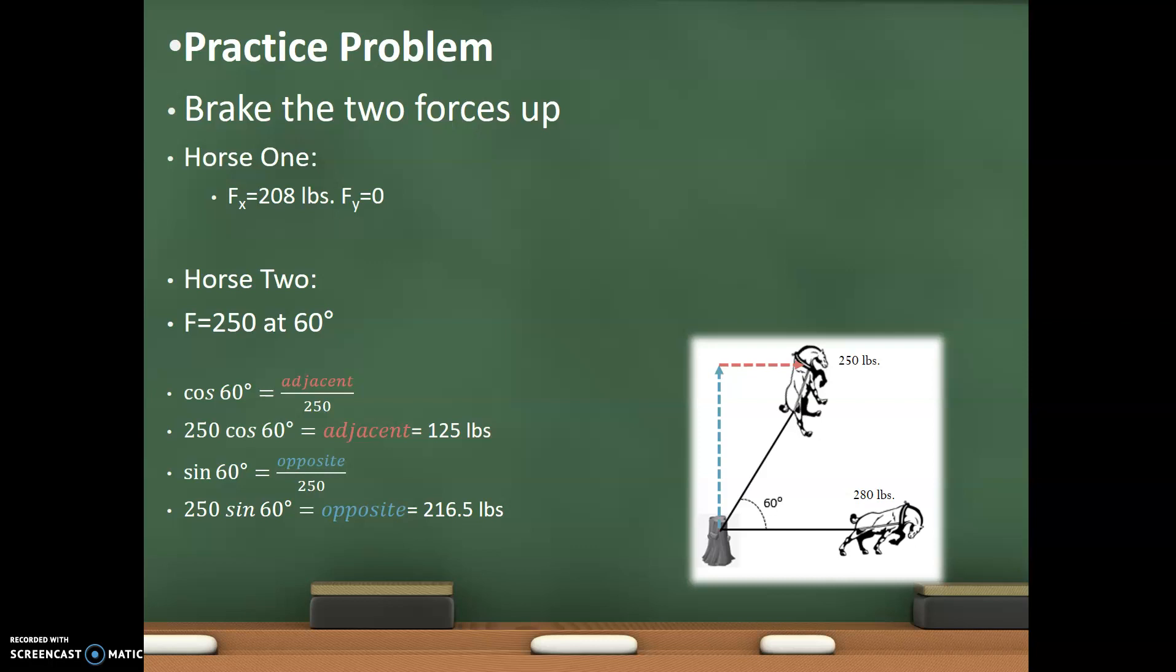But horse two is a little bit more complex. Horse two is pulling at an angle at 60 degrees, at 250 pounds at 60 degrees. So we're going to use, we're going to look for the horizontal component and then the vertical. So we're going to use the angle of 60 degrees and we're going to say the cosine of 60 degrees is equal to the adjacent over the hypotenuse, 250. So I plug that in. I do some rearranging. I pull my 250 over. 250 cosine 60 is equal to my adjacent side, which is 125.